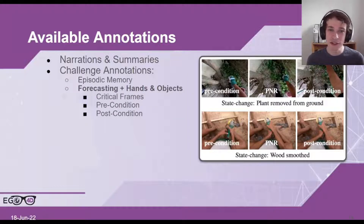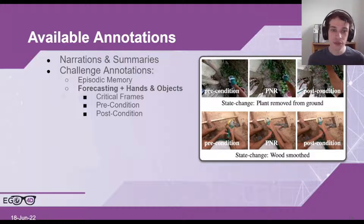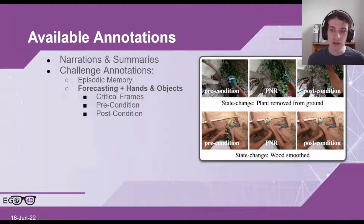We have two benchmark tasks: forecasting and hands and objects. Note that both these benchmarks use the same annotations. During these annotations, we have the critical frames and then pre and post conditions, which were labeled as when the action occurs. The critical frame is what we call the point of no return, and this is when the action begins. We also have pre and post conditions, which are the start and end times of this action.